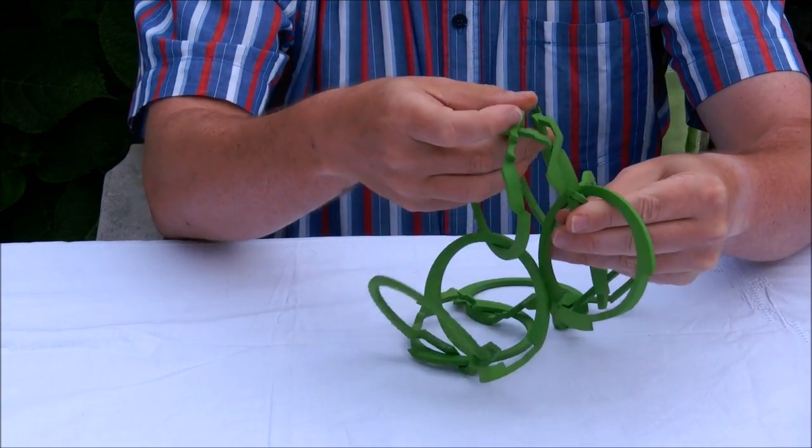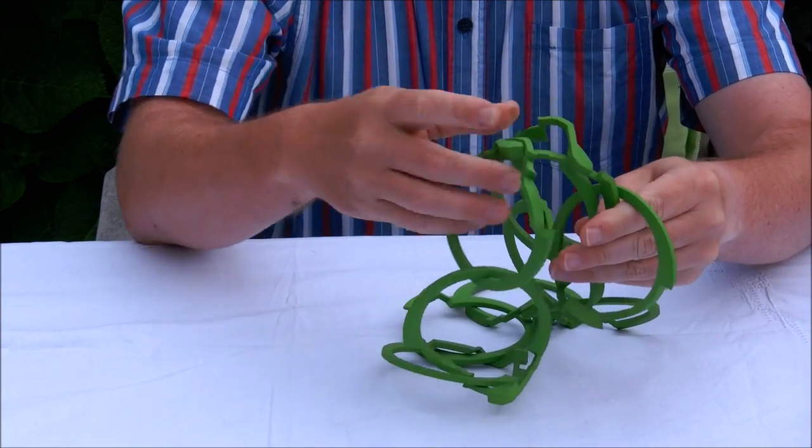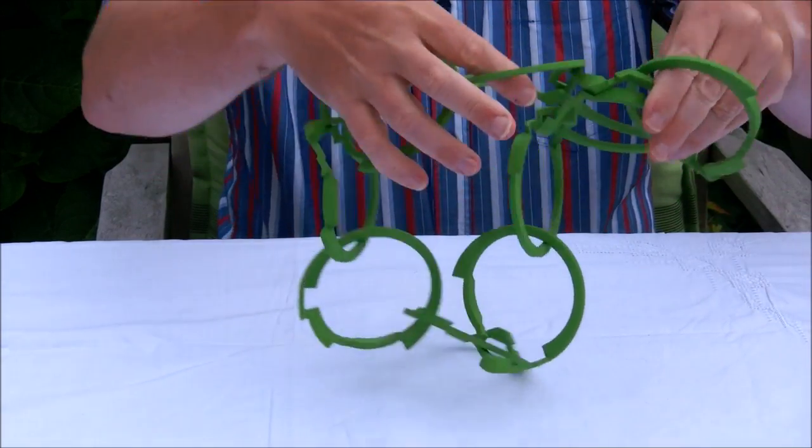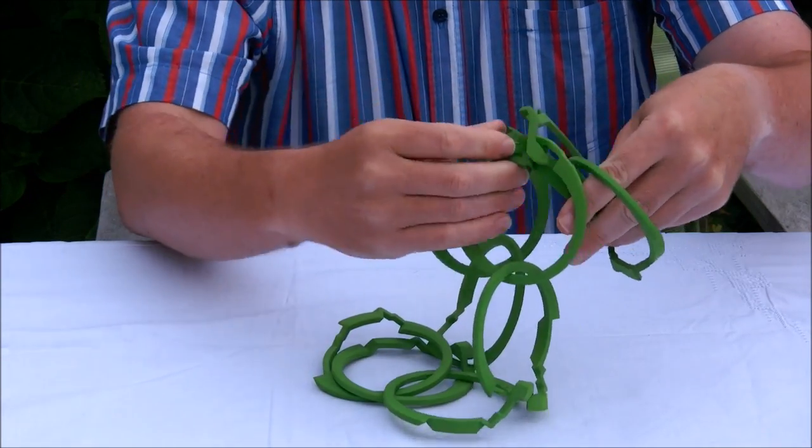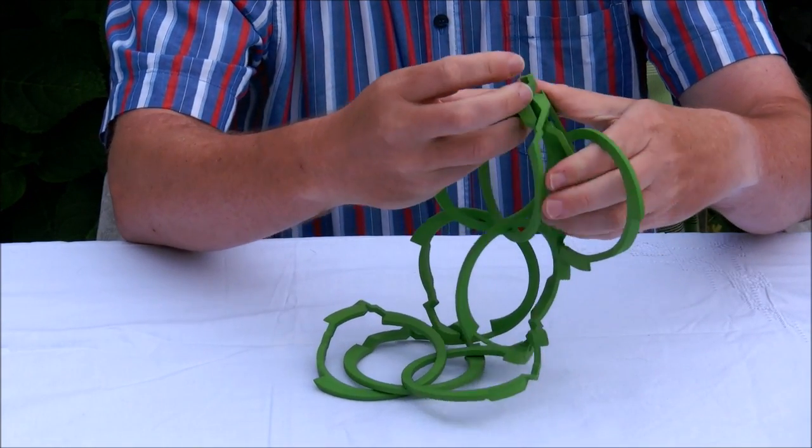Adding this one with the big knob there. Then here we have another one with the big knob. We put it here. We put the two rings together.